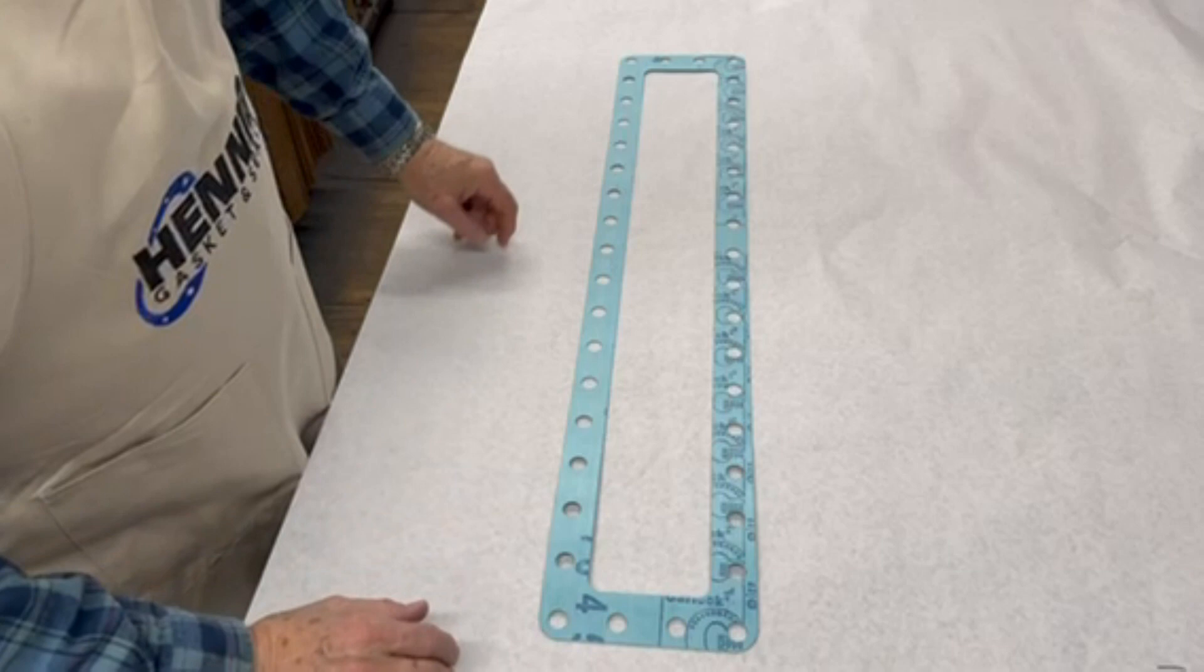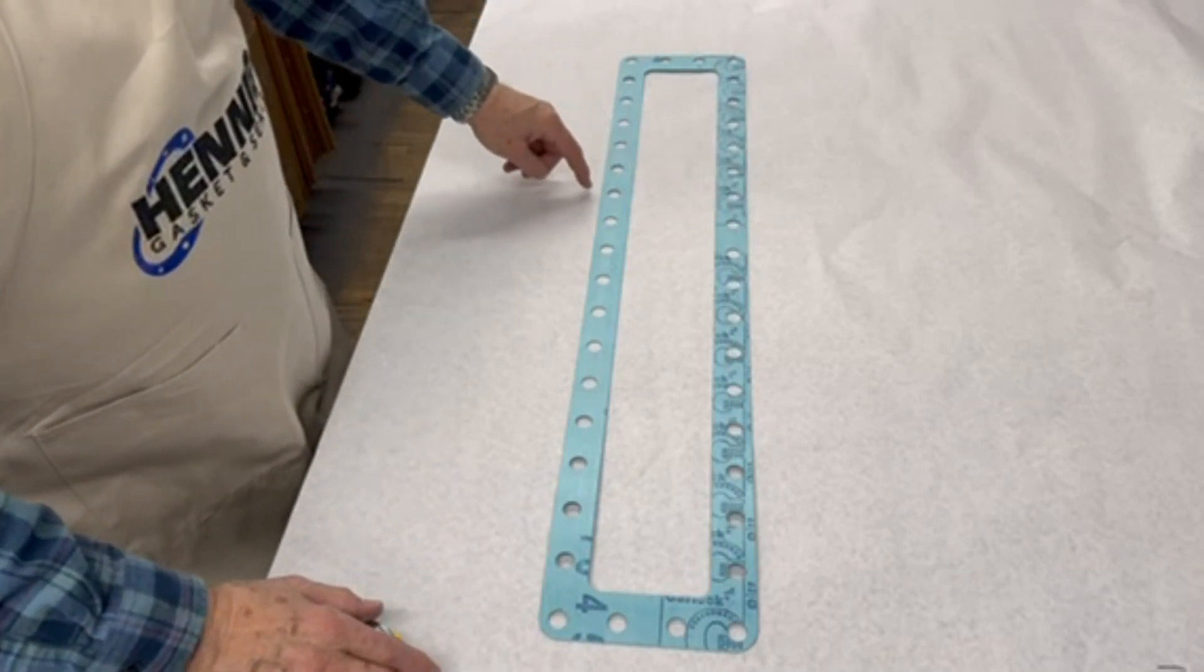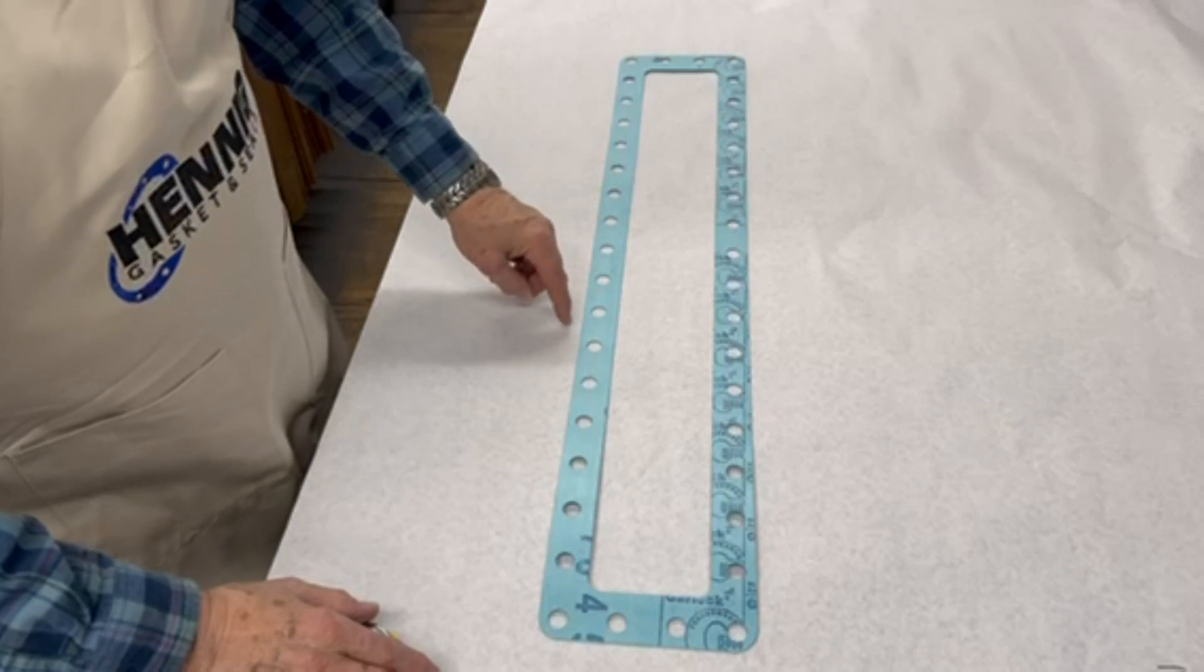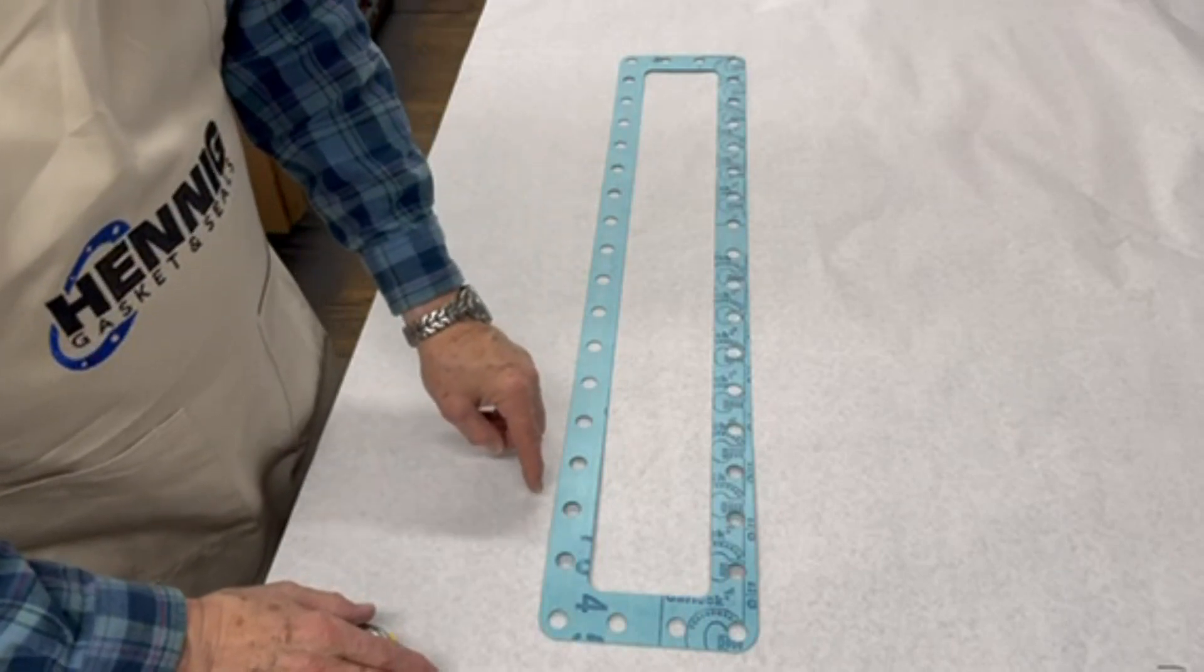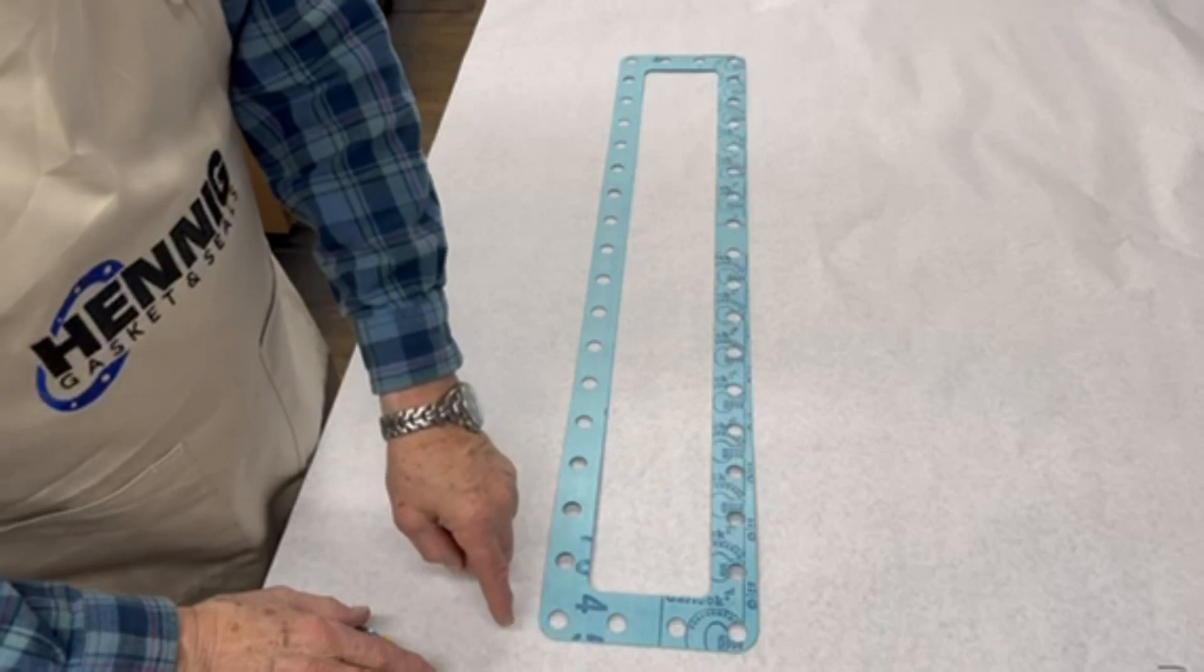So how many holes do we have? We'll count one side. Counting 1, 2, 3, 4, 5, 6, 7, 8, 9, 10, 11, 12, 13, 14, 15, 16, 17, 18. And there's 18 on the other side, so that's 36.